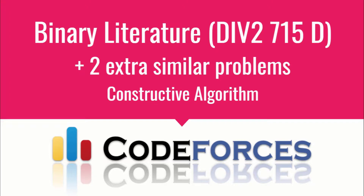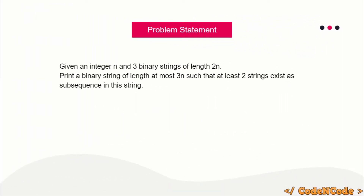So let's get started. The problem statement is: you are given an integer n and also three binary strings. The binary strings only contain two characters, either zero or one. They are each of length 2n. Print a new binary string such that it has at most length 3n and at least two out of these three input strings exist as a subsequence in it.